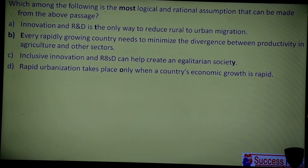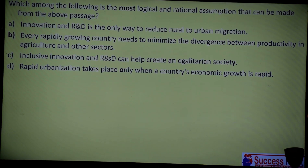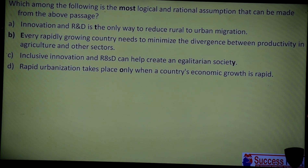Option 2 — Every rapidly growing country needs to minimize the divergence between productivity in agriculture and other sectors. The word 'every' makes it very broad — it means developed countries, developing countries, every country. This option needs to be considered carefully.